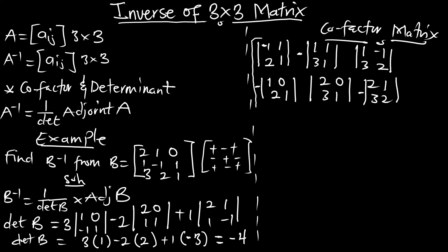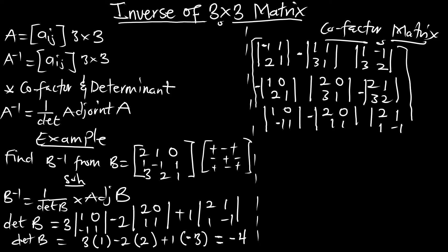And the third row: this is going to give us 1, 0, -1, 1. Here we are going to have a negative, that is 2, 0, 1, 1. And the last one is going to be 2, 1, 1, -1. So now we can find the determinant of these 2x2 matrices and obtain the cofactor matrix.